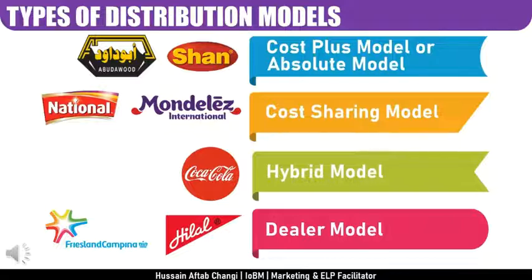With midsize distributors, every distributor covers a dedicated area: one looks after Johar and Gulshan, another covers North Karachi and North Nazimabad and Federal B Area, another covers Baldia and Orangi, and another covers DHA and Clifton. Each distributor is responsible for operating within their assigned territory and cannot cross into another territory, because that constitutes a territory crossover — which is considered a serious violation in sales, channel, and distribution.